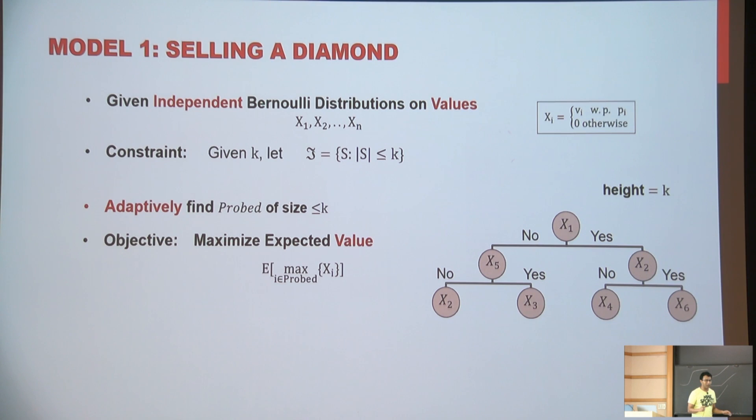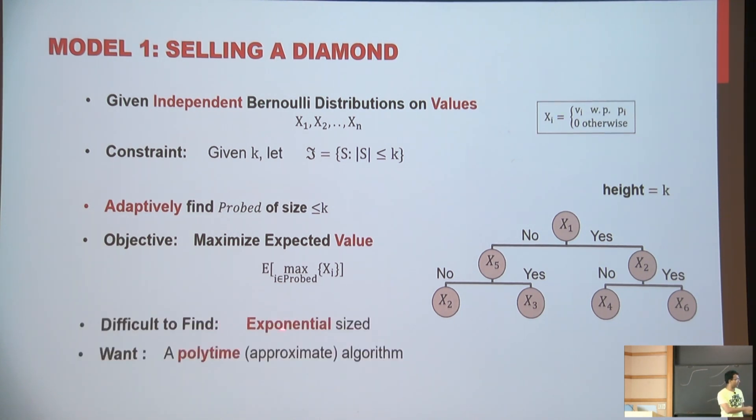So again, if computation is not a bottleneck, you can kind of brute force and find out this thing. But the issue is, as you see, the height of this tree or the size of the tree is already becoming exponential in k. So in general, finding this optimal decision tree becomes computationally infeasible.